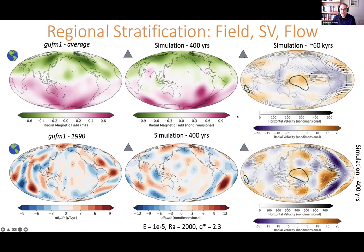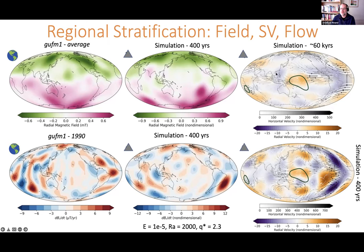Looking at a 400-year average snapshot compared with the GUFM model — GUFM field and secular variation on the left, our simulation in the middle for the field structure, and its flow structure on the right — the fields look quite similar. There are high-latitude flux patches, quiet Pacific secular variation, and large-scale flows similar to those seen in observations, including this eccentric gyre with westward flow over the equatorial Atlantic that diverts poleward at American longitudes, skirts around the Pacific, and comes back down over central Asia and Africa.